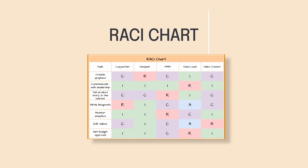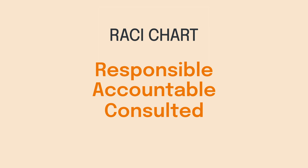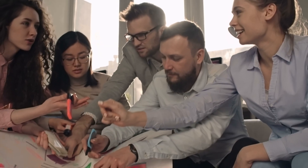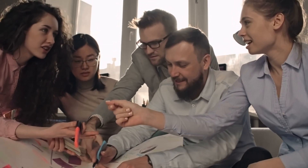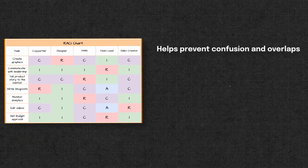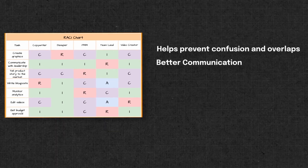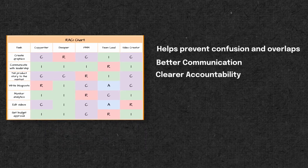At number one, we have the RACI chart. RACI stands for Responsible, Accountable, Consulted, and Informed. These roles are used to outline the responsibilities each person has in a project or process. It also means too many people aren't trying to make a decision at once, and it's clear throughout the project who to turn to when the need arises to make executive decisions. Mapping out roles in the RACI chart can help prevent confusion and overlap in responsibility, ensuring better communication and clearer accountability throughout your project.